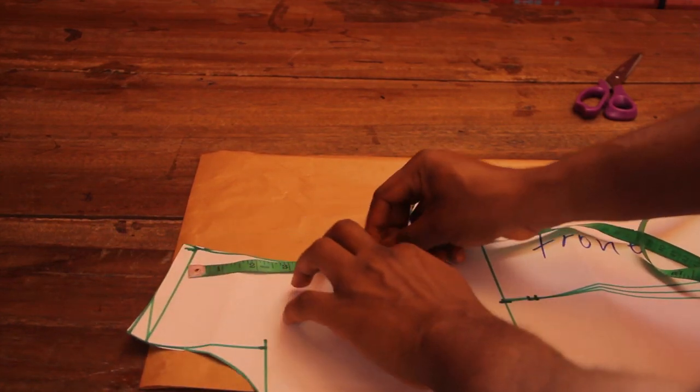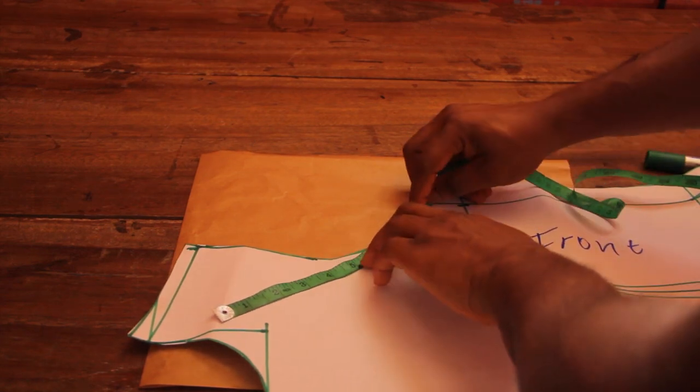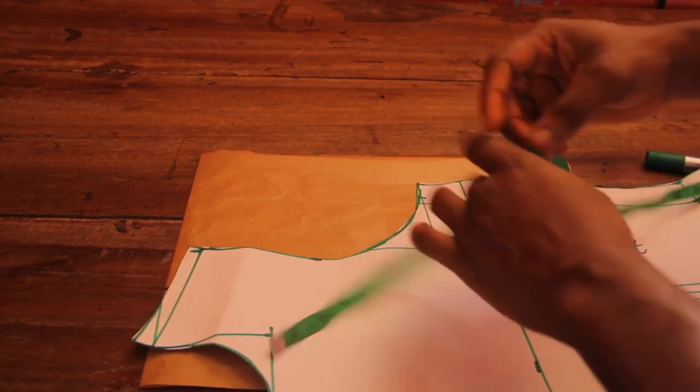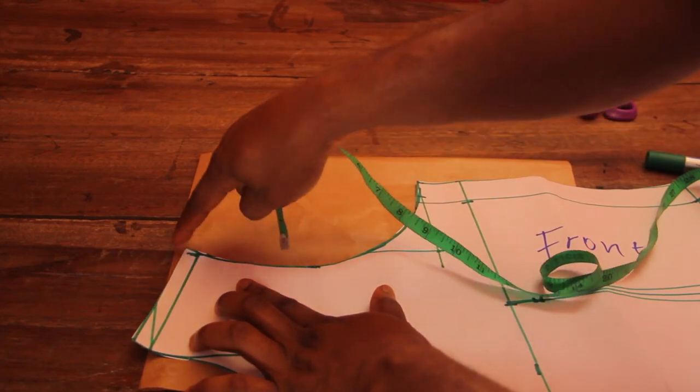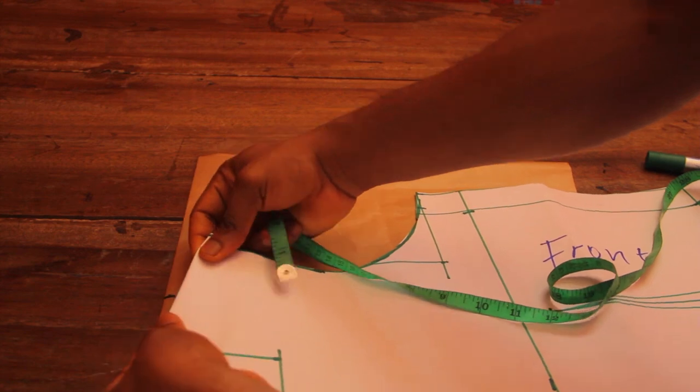As you can see in the video right now, I'm measuring on my armhole so that I can make the length of the top of my sleeve to be the same thing with my armhole, so that when I'm fixing it I won't have any shortage or excess.